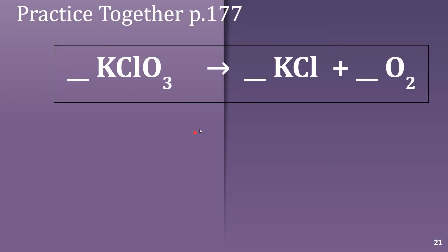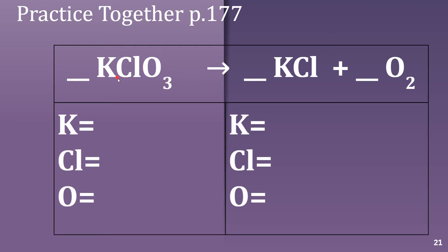The first thing we always do is write the equation. Luckily, this is written for us, so we can move on to the second step. The second step is to count the number of each element. So I've got K for potassium, Cl for chlorine, and O for oxygen, and I have it on both sides of the equation.